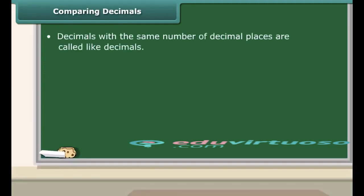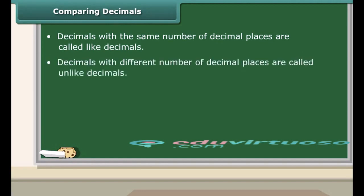Decimals with the same number of decimal places are called like decimals, and decimals with different number of decimal places are called unlike decimals.